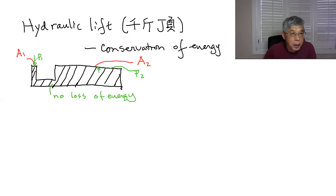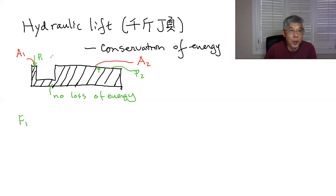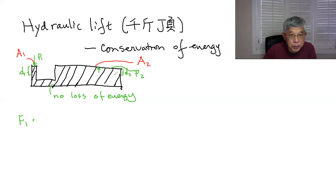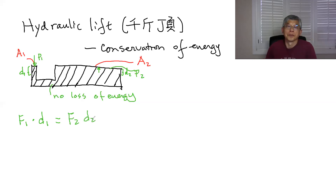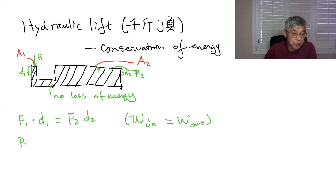Using conservation of energy, we say the work done here must be equal to the work done there. So F1 times D1 is equal to F2 times D2 — that's work in equals work out. And from the definition, F1 is equal to P1 times area A1, times D1, and F2 is pressure P2 times area A2, times D2.